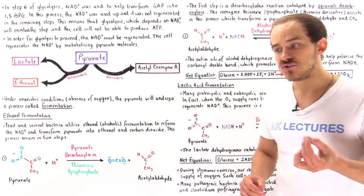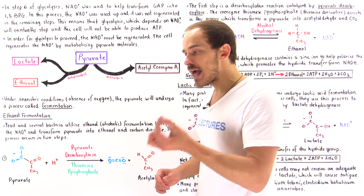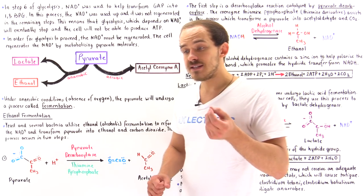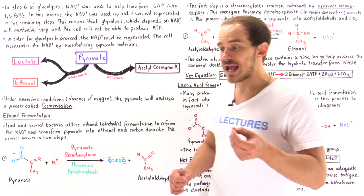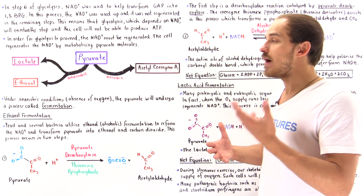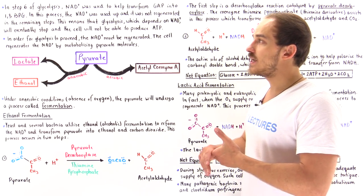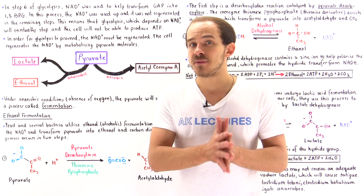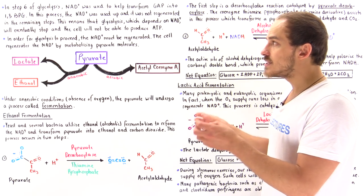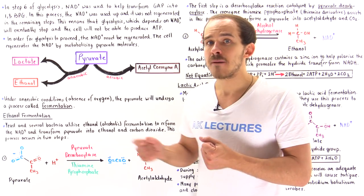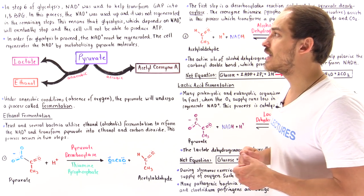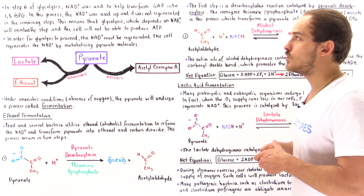Because our cells have a limited supply of NAD+ molecules — and by the way, NAD+ molecules are actually derivatives of niacin, which is vitamin B3 — because of this limited supply, glycolysis will eventually come to a stop when the cell runs out of its limited supply of nicotinamide adenine dinucleotide.